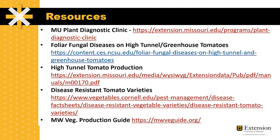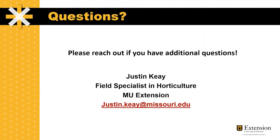There are some great resources that we'll include in the description to the YouTube video. The MU Plant Diagnostic Clinic is a very helpful tool. NC State has great information on foliar fungal disease management in high tunnel and greenhouse tomatoes. MU Extension has a great high tunnel tomato production guide. Cornell has that awesome disease resistance tomato variety guide. And the Midwest Vegetable Production Guide is a go-to resource for crop production and pest management information. If you have any additional questions, feel free to reach out.